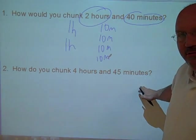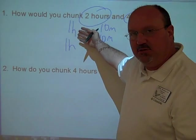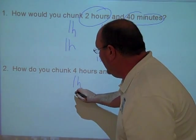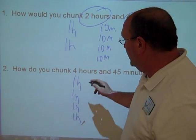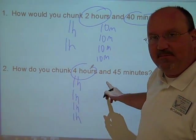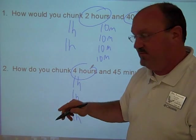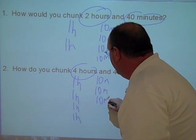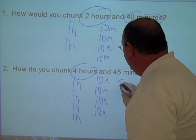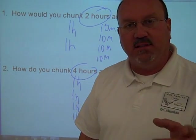How would you chunk four hours, forty-five minutes? Well, using this same strategy here, we would do one hour. That's four whole hours. And then forty-five minutes is ten, ten, ten, ten, and five. Four hours, forty-five minutes.